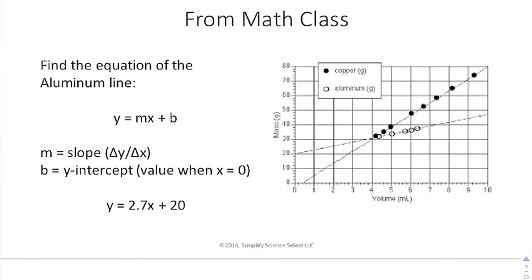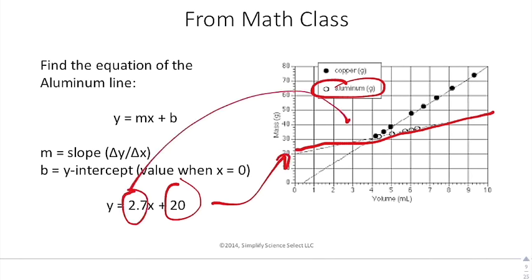From a math class, you know that a line has an equation of y equals mx plus b. We're going to look exclusively at this aluminum line. When you look at the aluminum line, you have a line, and you can do the y equals mx plus b for it. You see that it has a y-intercept of 20, and a slope of 2.7, and I got that just from picking two points on the line. So you have y equals 2.7x plus 20, and that's great for math class. In fact, that's perfect.